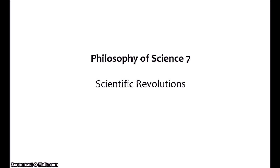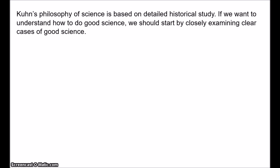The first thing to say about Kuhn is that he takes a very different approach to philosophy of science than all the other philosophers we've examined so far. The theories discussed in the previous videos are very abstract — based on general logical or conceptual considerations. But Kuhn builds his philosophy on detailed analyses of actual historical cases. Kuhn was trained as a historian of science and he brings a lot of that to bear on his philosophy.